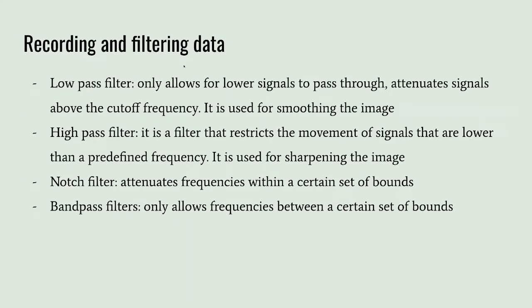Now we'll look at the actual experimentation part of our project, which includes taking the EEG data we recorded and filtering it using mainly three different types of filters. The low-pass filter only allows lower signals to pass through and attenuates signals above the cutoff frequency. It is used for smoothing the image, so high-frequency peaks and bumps get cut off.